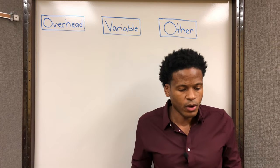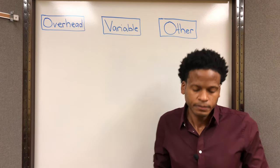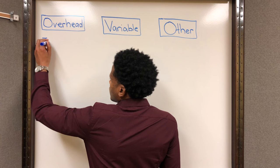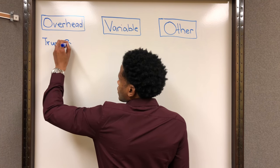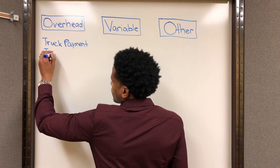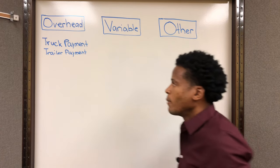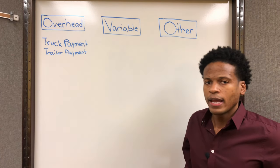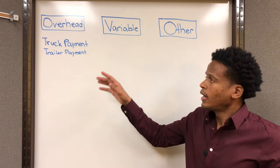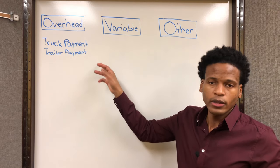Let's go ahead and get started with the overhead expenses. Some typical overhead expenses are your truck payment and your trailer payment. You may or may not have a loan, but if you do, those fall into the overhead expenses because you're going to have to pay that note no matter what — whether you ran a thousand miles or no miles that month, you're still going to have to pay your truck and trailer payments.